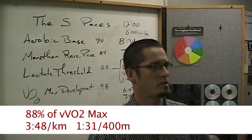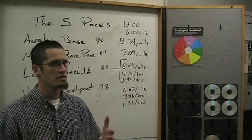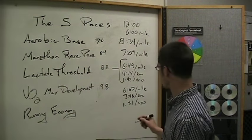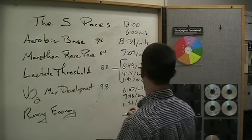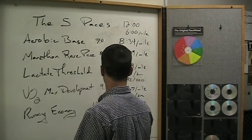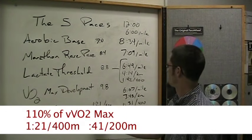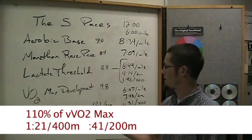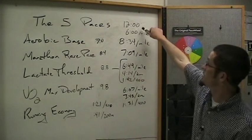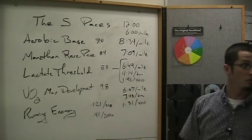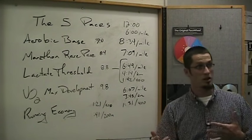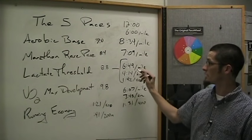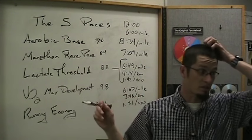Finally, the things we call over-speed — running economy reps. These aren't sprints by any means. When you go out and do a session of repeat 400s or 200s at 110% of your velocity at VO2 max, that's 1:21 per 400 or about 41 seconds per 200 meters on the track. These are all based on that two-mile time trial. Six minutes per mile is 100%, so 70% is 8:34, 84% is 7:09, 88% is 6:49, and 98% is 6:07 per mile.